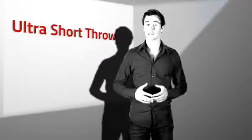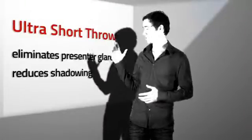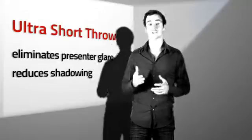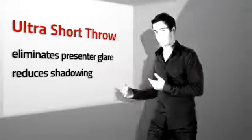So how does it all work? Well, an ultra-short throw projector eliminates presenter glare and greatly reduces shadowing. This is achieved quite simply by taking the presenter out of the light path.